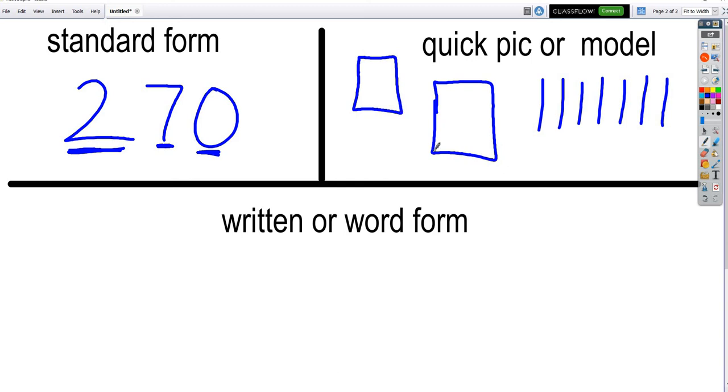So, you told me this number was 270. I'm going to count it and make sure you're right. 100, 200. Oh, so there's 200. And then 10, 20, 30, 40, 50, 60, 70. 270. You're right. The number is 270. Awesome. So, again, we have standard form written, 270. We've got a quick picture that shows 270 or a model that shows 270.